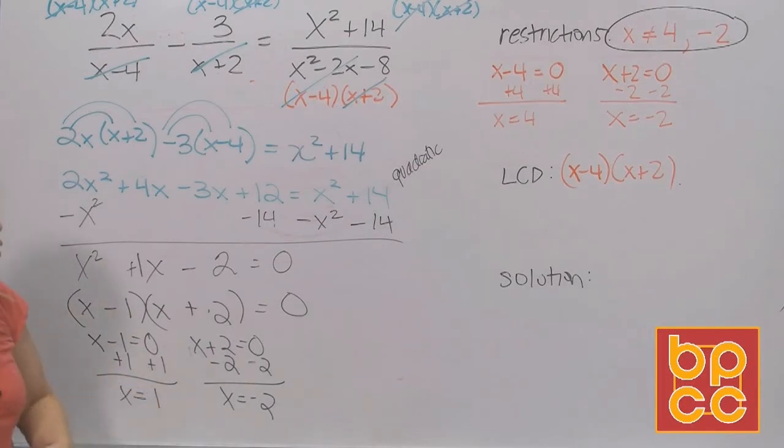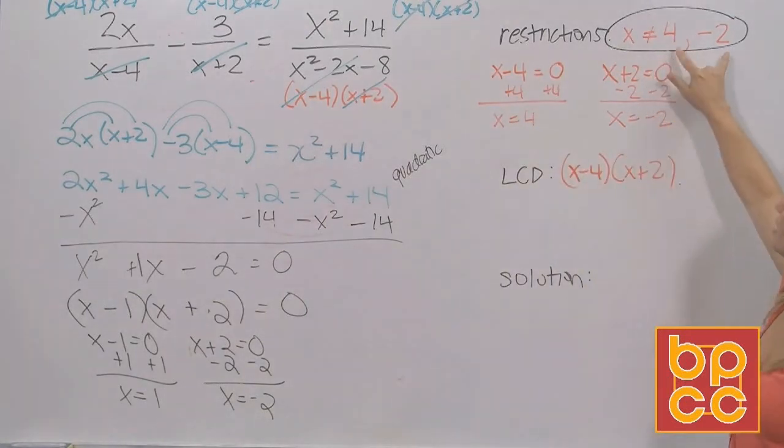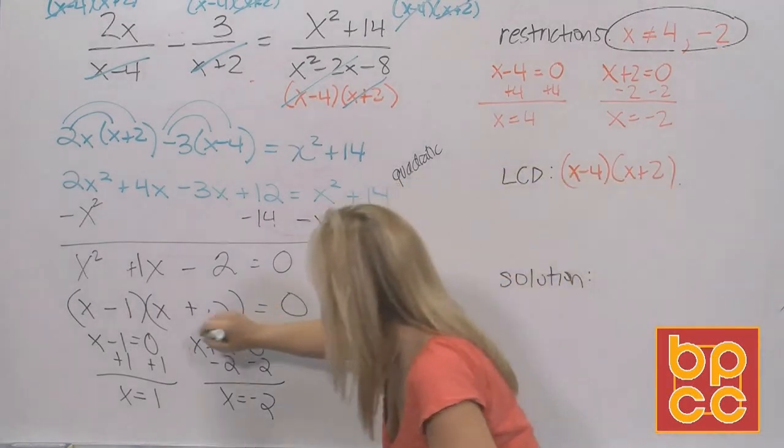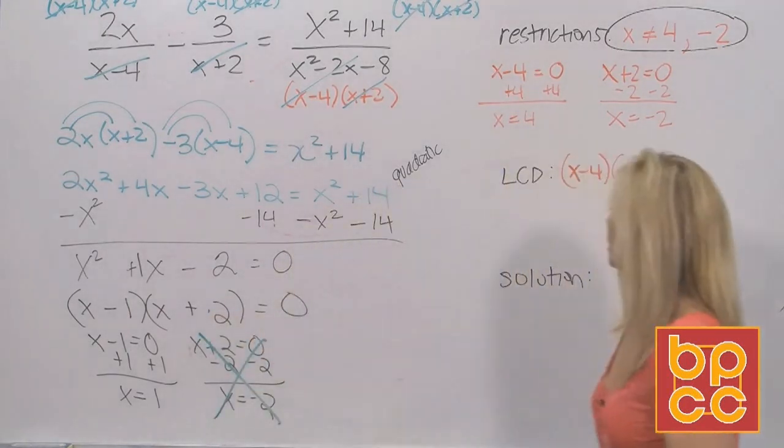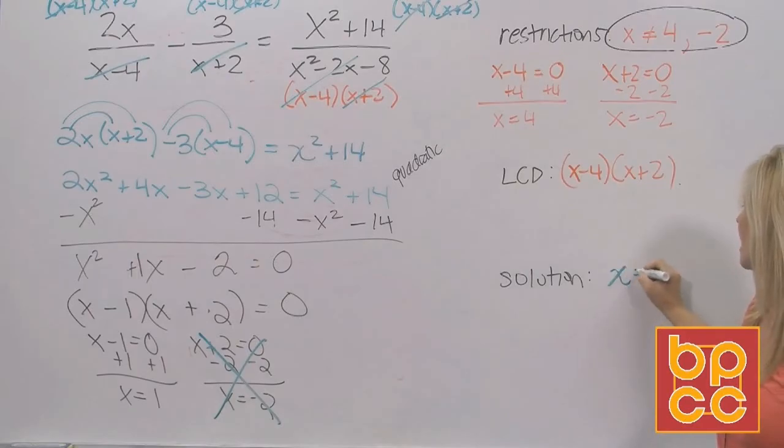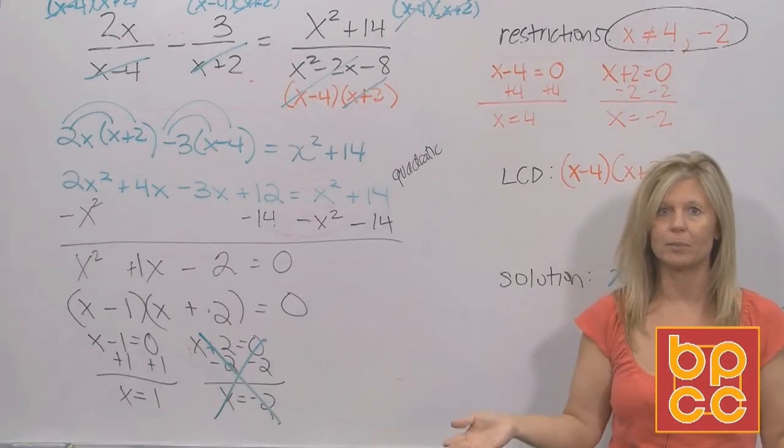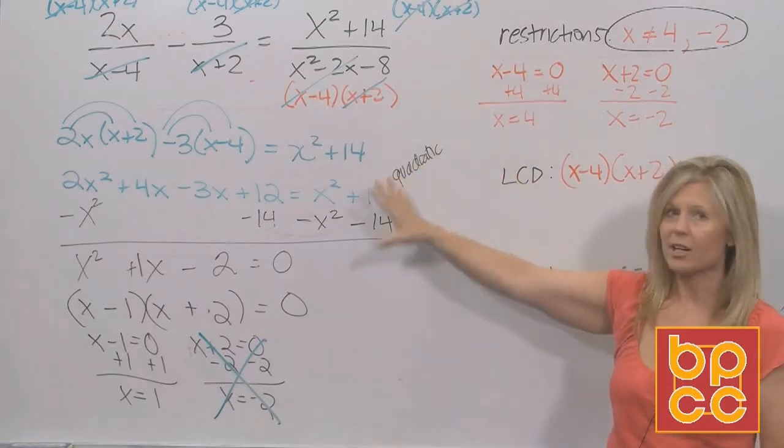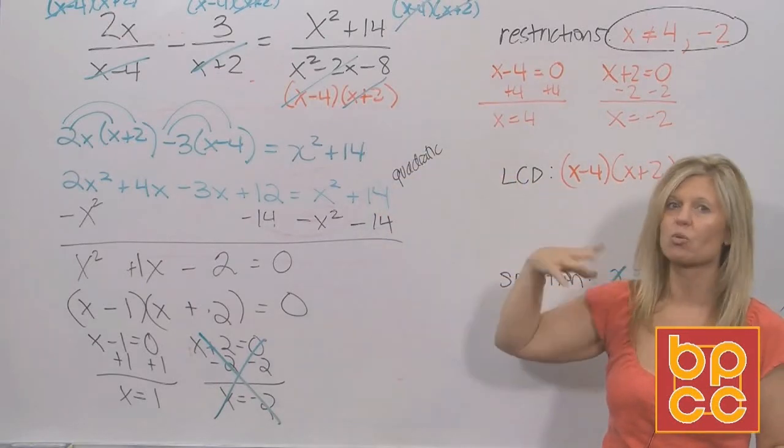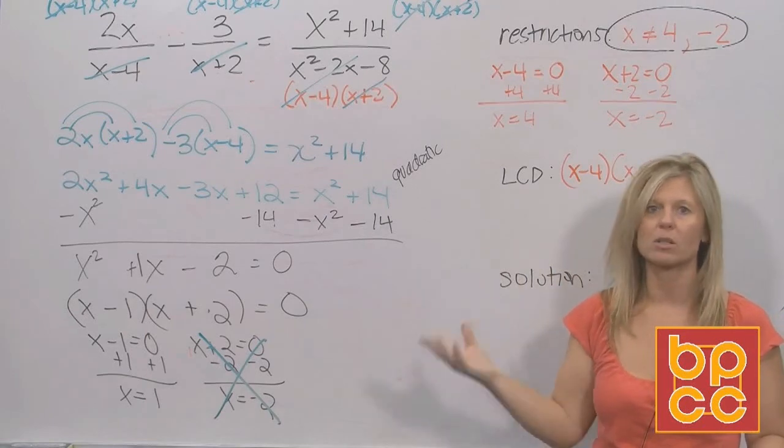Are these both the solution? Well, if you look, you set up here in the very beginning the restrictions. This is telling me what the answers cannot be. You said the answer cannot be negative 2. So this is extraneous. It gets thrown out. So when they ask for the solution, we just have one solution. The only number that's going to make that whole equation balance is 1.